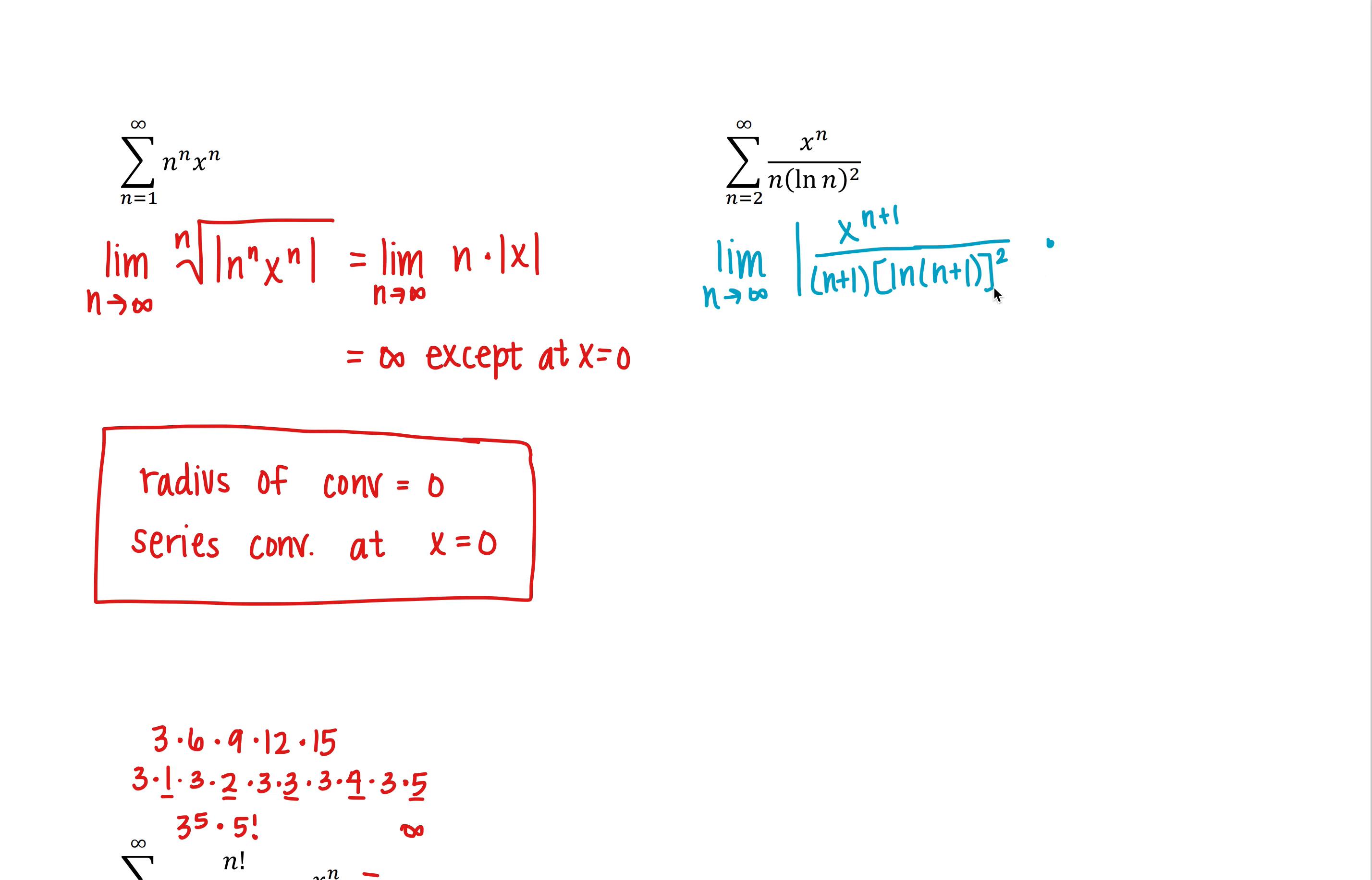And then it would be divided by the nth term. Again, I'm going to multiply by the reciprocal. So we have n times the natural log of n squared over x to the n.